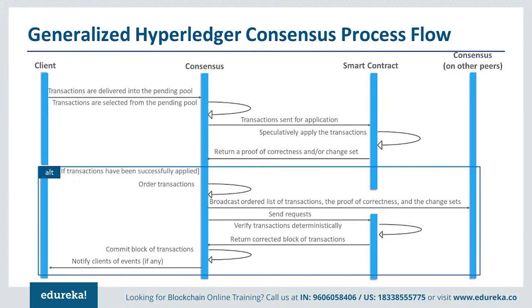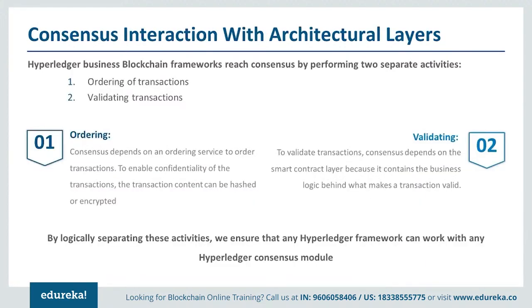The endorser nodes run the chaincode and return proof of correctness — whether the transaction is correct and what data needs to be written — back to the client. The client then broadcasts the ordered list of transactions through the ordering service. The ordering service orders the list of transactions along with the proof of correctness and the change set to the other peers, known as committed peers. Events are then notified to various clients or applications. Ordering means collecting transactions, creating blocks, doing hashing, and transmitting blocks to committer nodes. Validating means verifying incoming transactions at the nodes.